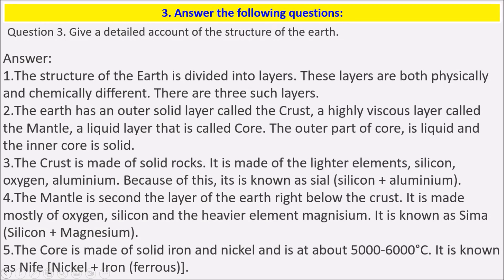The mantle is the second layer of the Earth, right below the crust. It is made mostly of oxygen, silicon, and the heavier element magnesium, and is known as SIMA (silicon + magnesium). The core is made up of solid iron and nickel and is about 5,000 to 6,000 degrees Celsius. It is known as NIFE (nickel + iron, i.e., ferrous).